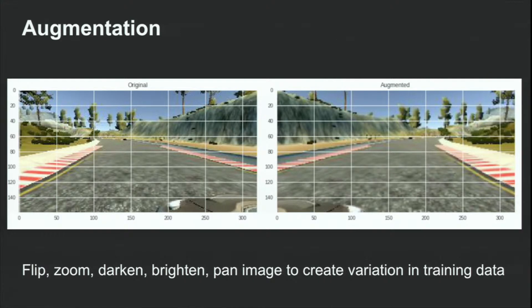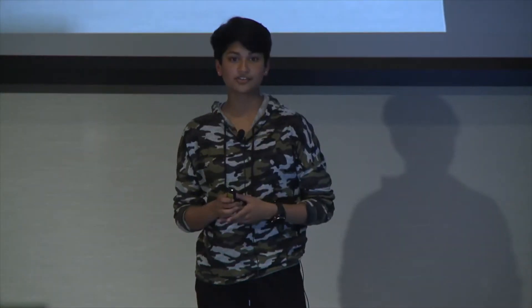If it doesn't know what the patterns would be when the screen is darker, then it doesn't know how to drive. So there are a number of things we can do to augment the image. They include flipping, zooming, darkening, brightening, and panning the images to create variations in the training data. If you were to flip the image, for example this one is flipped, you also have to flip the steering angle, so from negative to positive. This is super useful for one main reason, which is making sure that your data distribution is even.